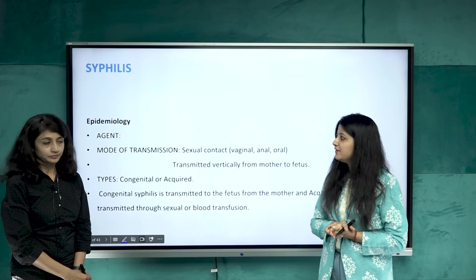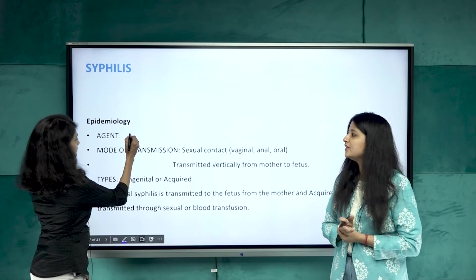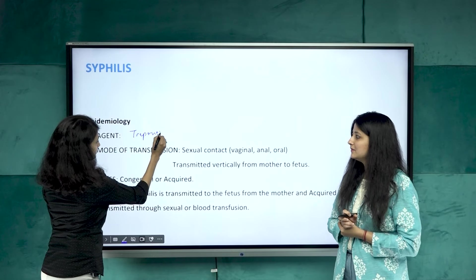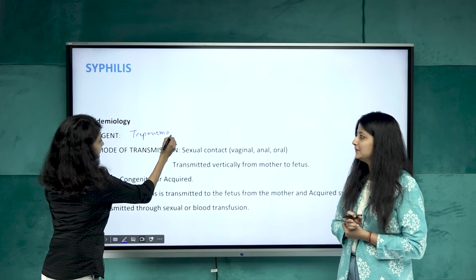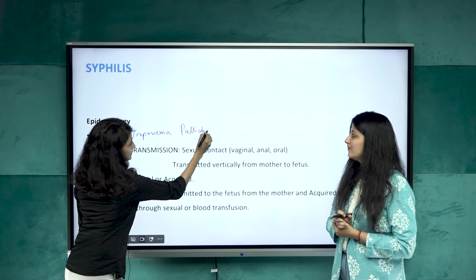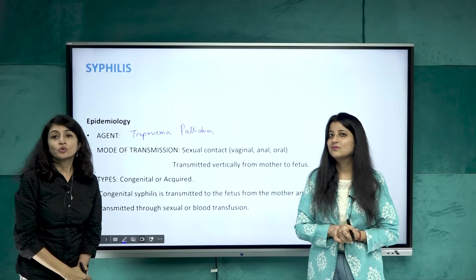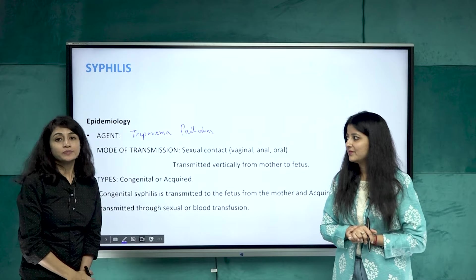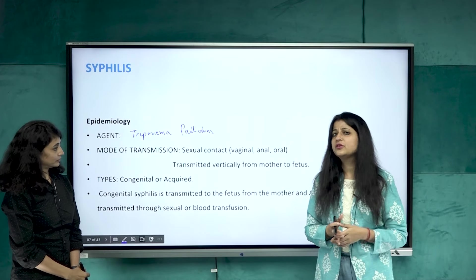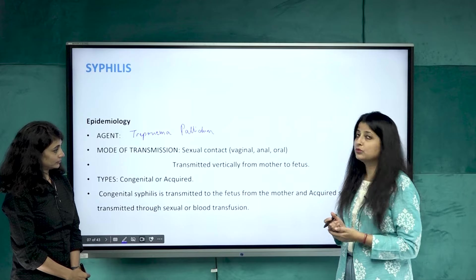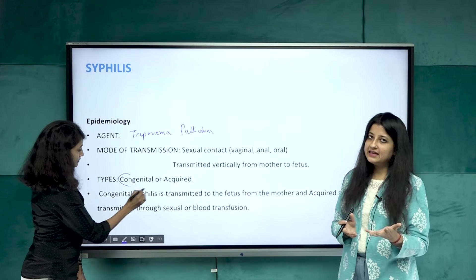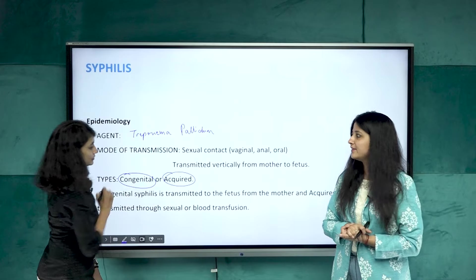Let's start with syphilis. The agent for syphilis is Treponema pallidum, a bacterium that causes syphilis based on its inoculum size. The mode of transmission is sexual contact, and it also transmits from mother to baby. Types include congenital as well as acquired syphilis.